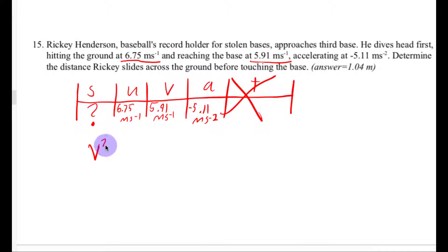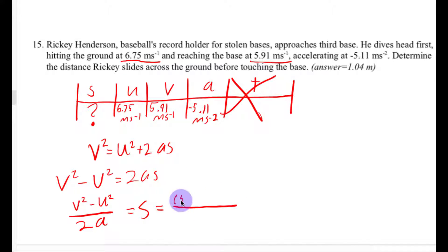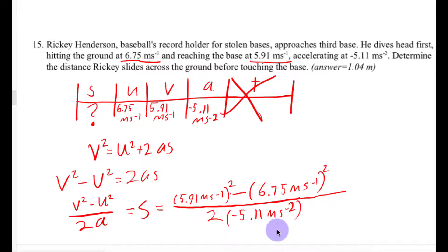Using the equation V squared equals U squared plus 2AS, we plug in the numbers and solve for displacement. The result is 1.04 meters.